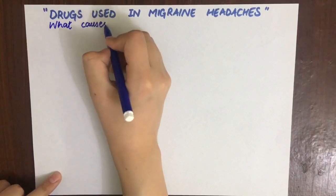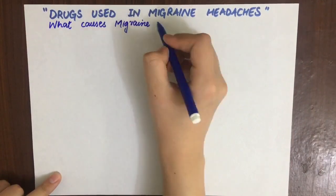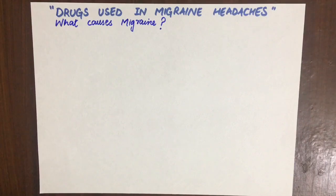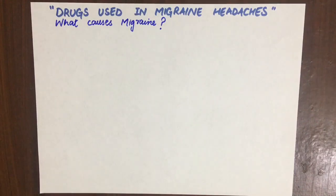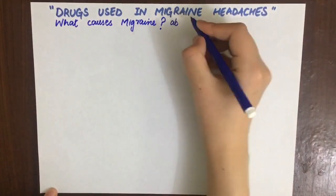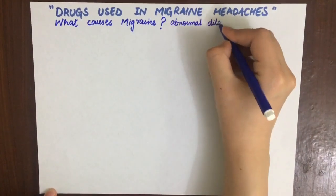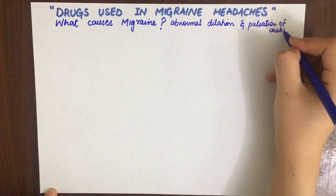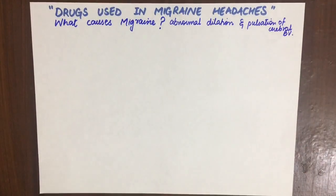Now what causes migraine? There are many theories to explain this but they are still just theories. The older one suggests that symptoms were due to changes in blood flow to the brain. Another aspect of migraine pain theory explains that migraine pain happens due to waves of activity by neurons that release serotonin, which causes abnormal dilatation and pulsation of cerebral blood vessels.